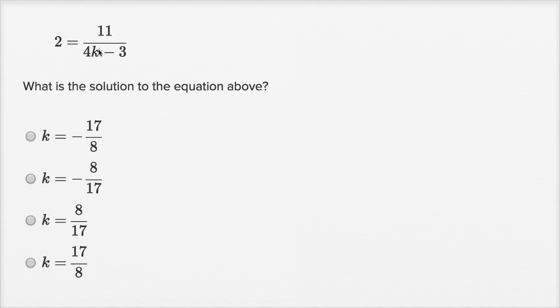One way is we could multiply both sides of this equation times four k minus three. So let's just do that, four k minus three.